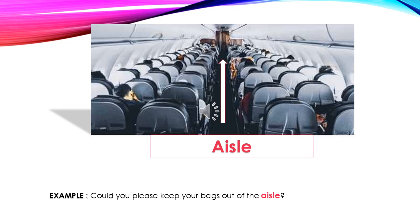Here we have the aisle — as the arrow shows, this is the space between the seats on the aircraft. Here's an example: 'Could you please keep your bags out of the aisle?' When you get on the plane it can get a little tight with passengers' luggage. Note that the 'S' in aisle is silent.